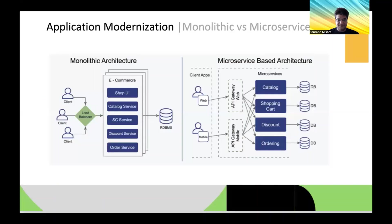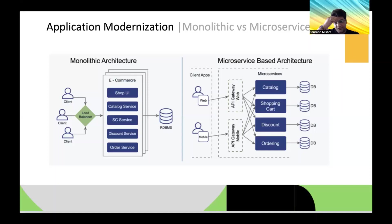This example illustrates monolithic versus microservices. On the left side of the diagram, we're looking at an e-commerce site with various applications running — a Shop UI, Catalog Service, HC Service, Discount Service, and Order Service. In the monolithic diagram, all client requests hit a load balancer, which routes to the various applications, which in turn get data from database servers. This is quite complex if you want to change any particular parameter for any of the applications.